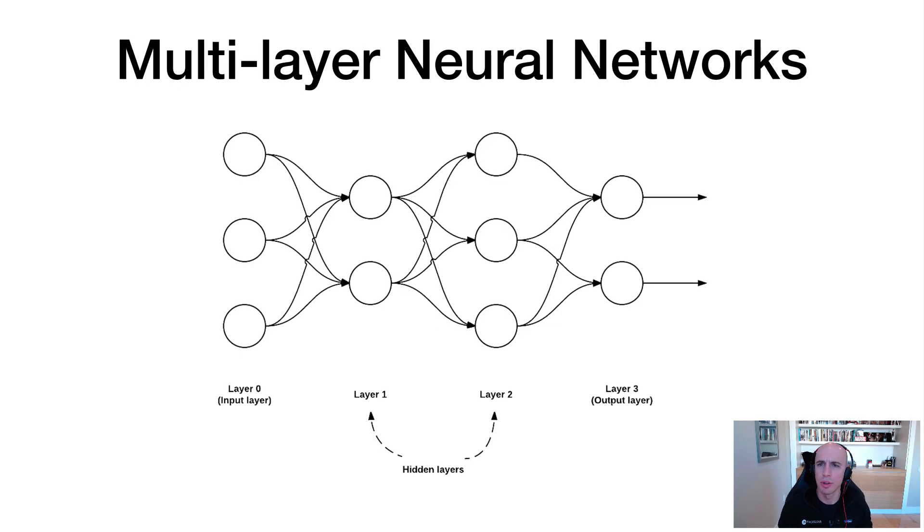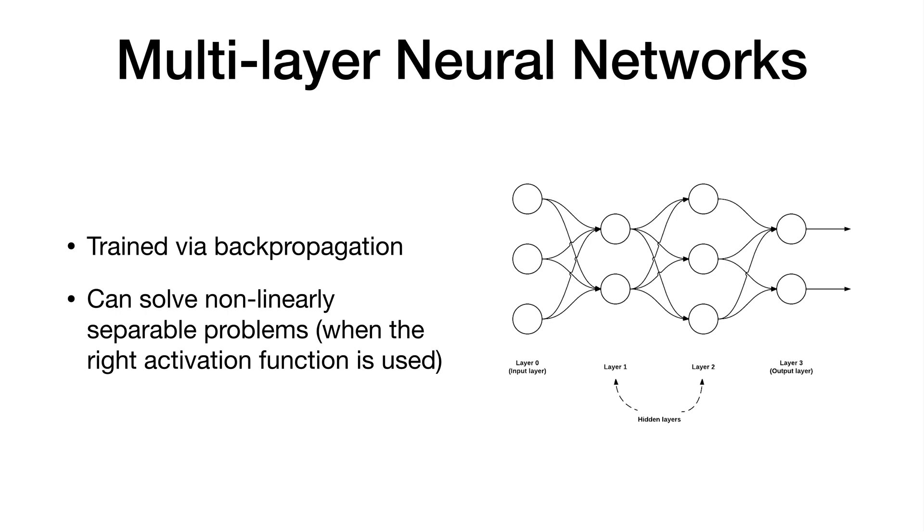So researchers continued studying neural networks, and we started to create multi-layer networks. And we call these multi-layer networks because there's one or more hidden layers inside the network. And again, these layers have nodes that can be tuned via algorithms such as backpropagation. And in fact, backpropagation is arguably the most important algorithm that has made neural network research possible. We have algorithms like your optimizers like stochastic gradient descent, vanilla gradient descent, and then newer optimizers such as Adam, Adagrad, and RMSprop. But really, backpropagation is what has allowed us to train deeper neural networks with one or more hidden layers. And it's also what's allowed us to solve nonlinearly separable problems. So again, multi-layer networks, they're trained via backpropagation. They can solve nonlinearly separable problems, which we'll discuss in a second. But I want to caveat that by saying when the right activation function is used.